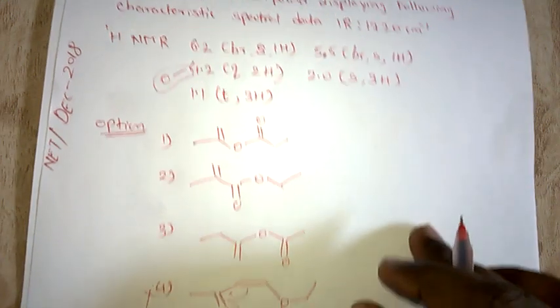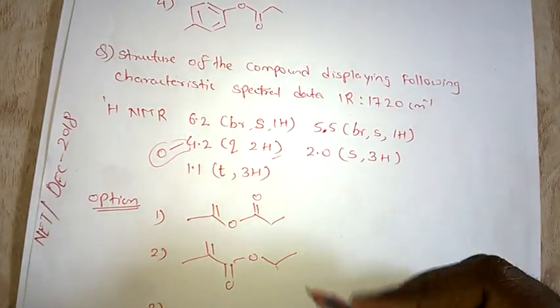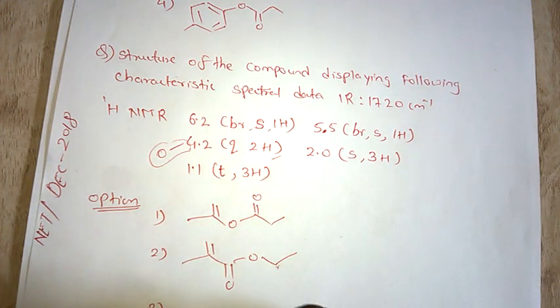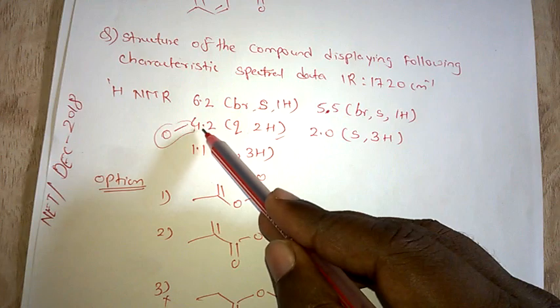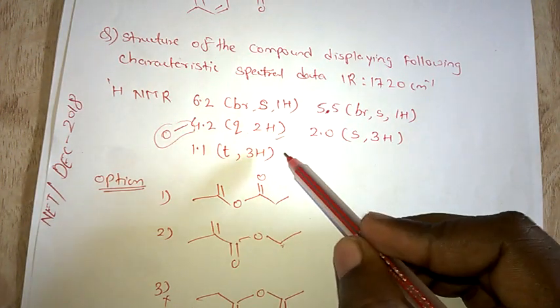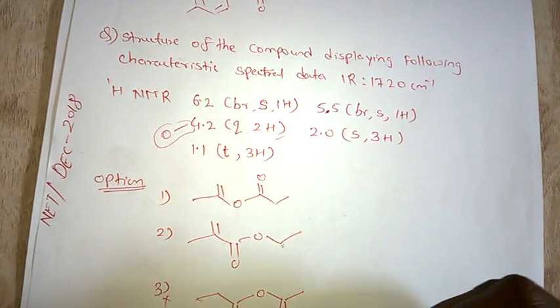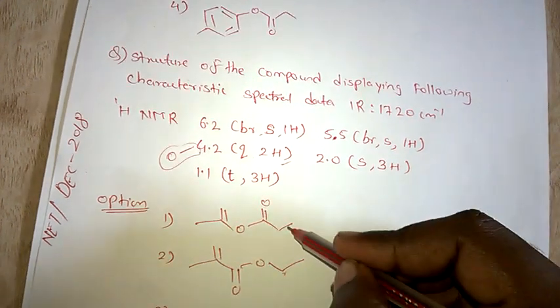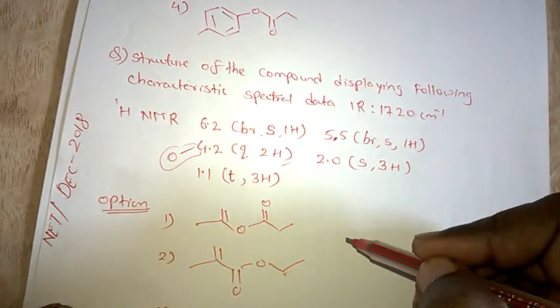So this is not our structure. Now see the remaining - this and this are also cancelled because I told you that 4.2 quartet 2H means CH2 attached to oxygen. Here there is no CH2 attached to oxygen, so this is also cancelled. Remaining are this and this.